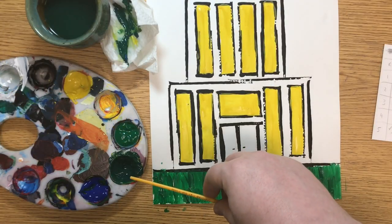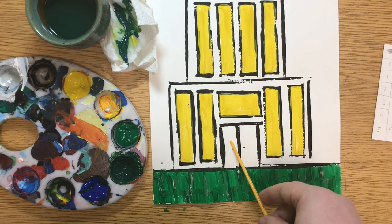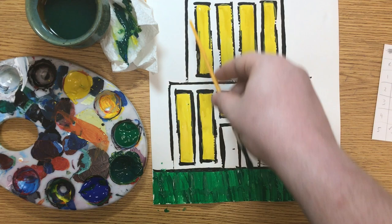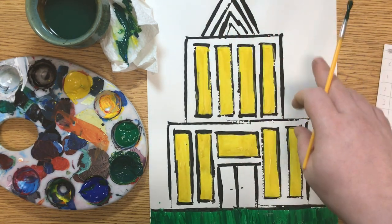So here I've mixed up a little bit of a blue-green, and my thought was to use blue-green for the doors and yellow-green for the rest of the building and maybe some blue-green again up in the rooftop.